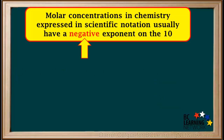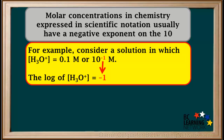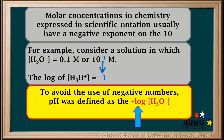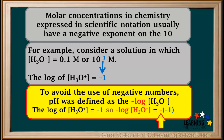Molar concentrations in chemistry, expressed in scientific notation, easily have a negative exponent on the 10. For example, consider a solution in which the concentration of hydronium is 0.1 molar, or 10 to the negative 1 molar. The log of the hydronium ion concentration is negative 1. To avoid the use of negative numbers, pH was defined as the negative log of the hydronium ion concentration. So the negative log of hydronium ion concentration is the negative of negative 1, which is positive 1.